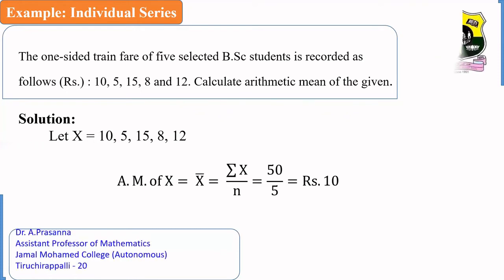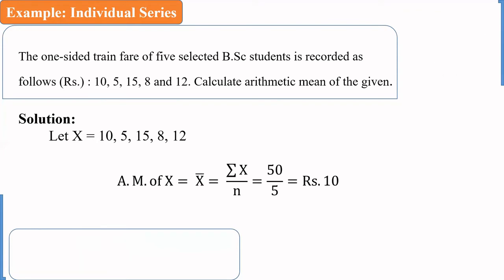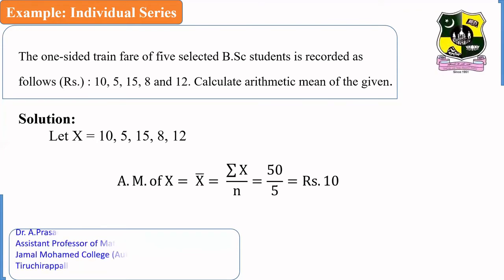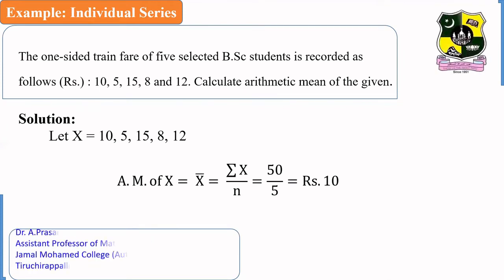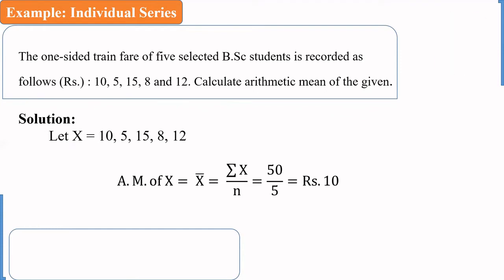Let x be 10, 5, 15, 8, 12. Calculate arithmetic mean. This is the individual series. The formula for individual series: arithmetic mean is equal to summation of x by n.